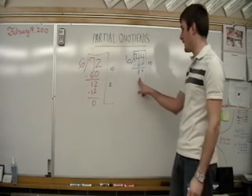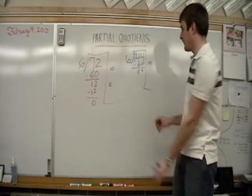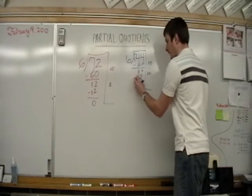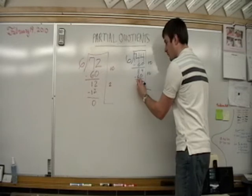Now, how many 6s will go into 84? Well, I know, again, 6 times 10 is 60. So at least 10. We'll subtract that, and we are left with 24.